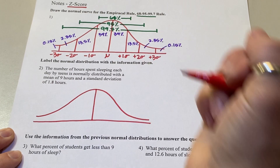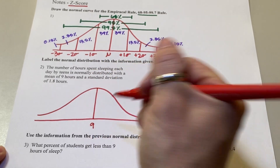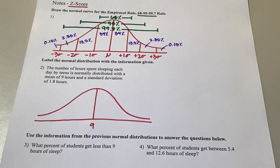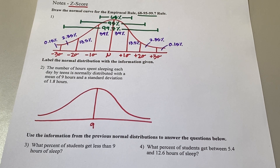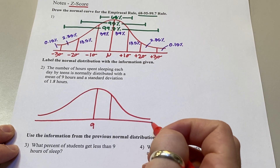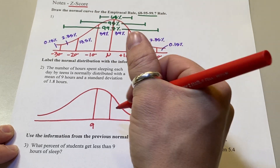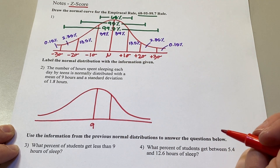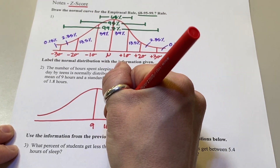Right in the middle is our mean — what did it say the mean was? Nine hours of sleep. And our standard deviation was 1.8. Going to the right, we're adding 1.8, so nine plus 1.8 gives us 10.8 hours.